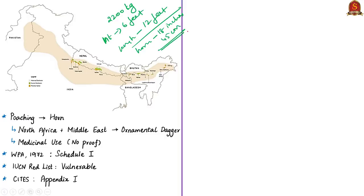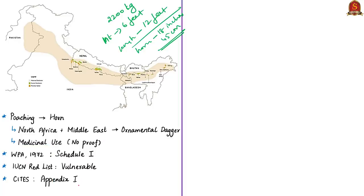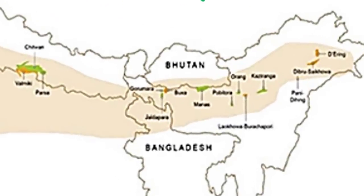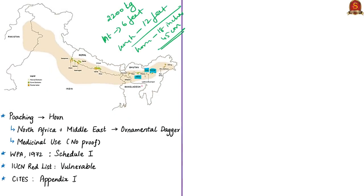Indian and Nepalese governments have taken major steps toward Indian rhinoceros conservation with the help of World Wildlife Fund. Kaziranga National Park, Manas National Park in Assam, and Pobitora Reserve Forest in Assam have the highest Indian rhino density in the world. Orang National Park and Laokhowa Reserve Forest of Assam have a very small population. Poaching for the illegal trade in rhino horn remains the biggest threat. The horn is valued in North Africa and the Middle East as an ornamental dagger handle.